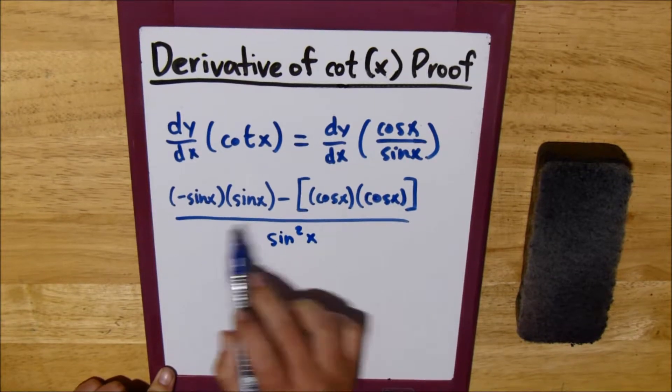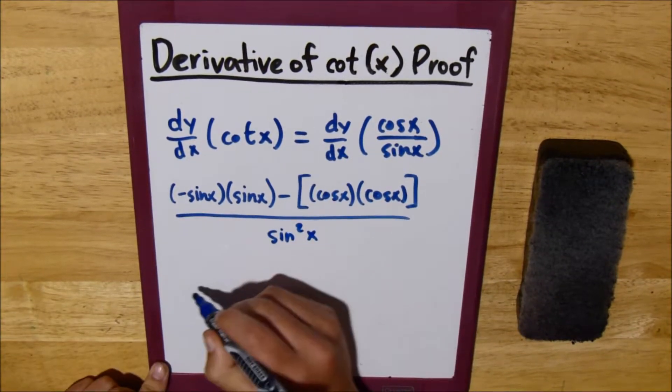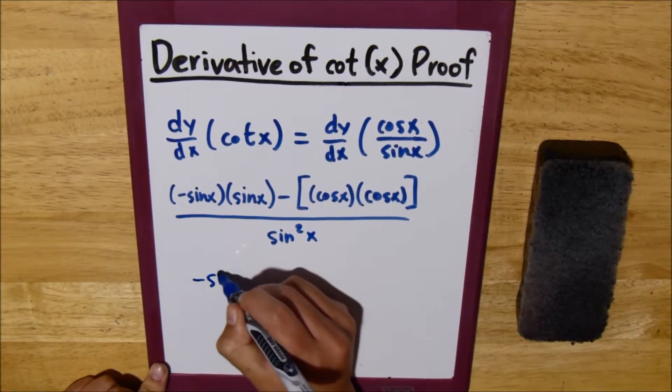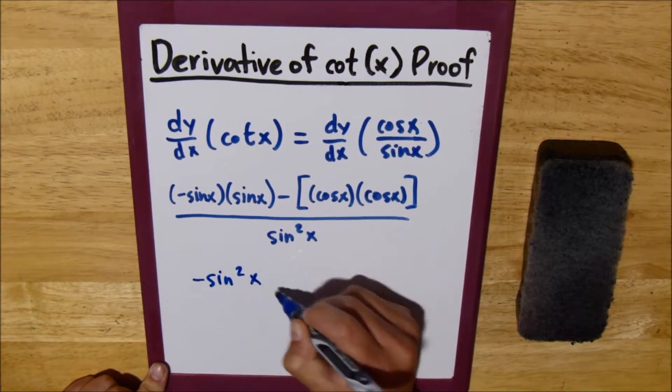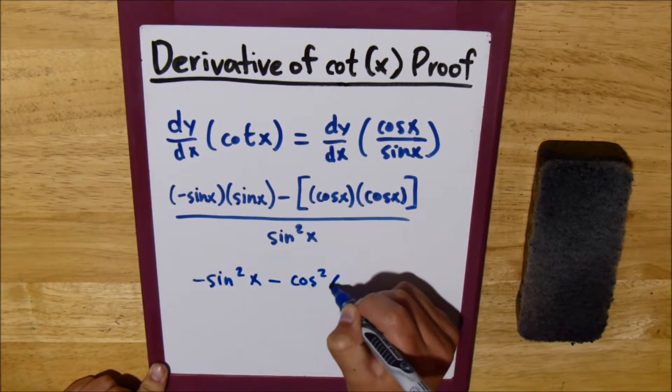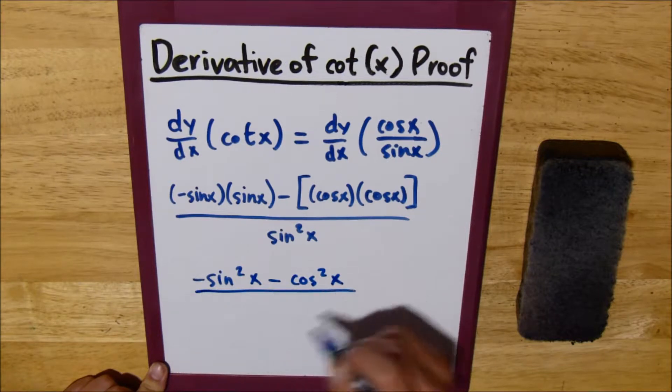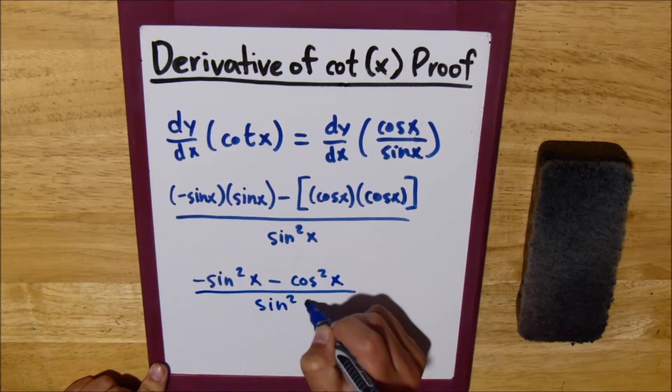We can multiply out the numerator. We get negative sine squared x minus cosine squared x all over sine squared x.